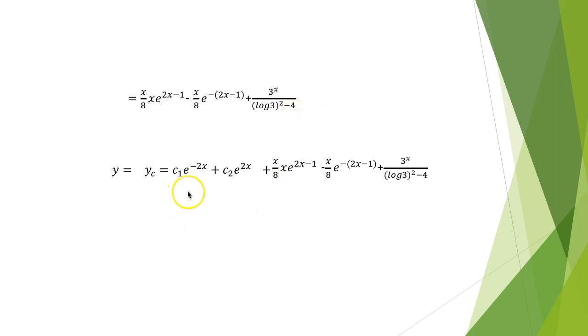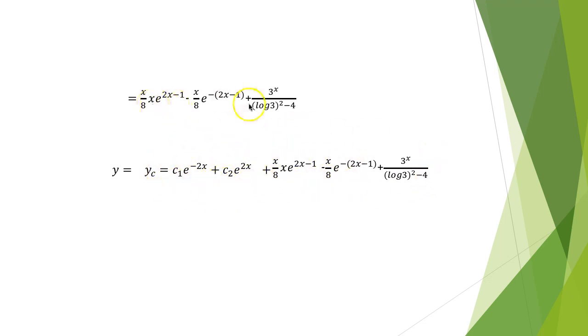So the complete solution is the complementary function c₁e^(−2x) + c₂e^(2x) plus the particular integral which we have just calculated.